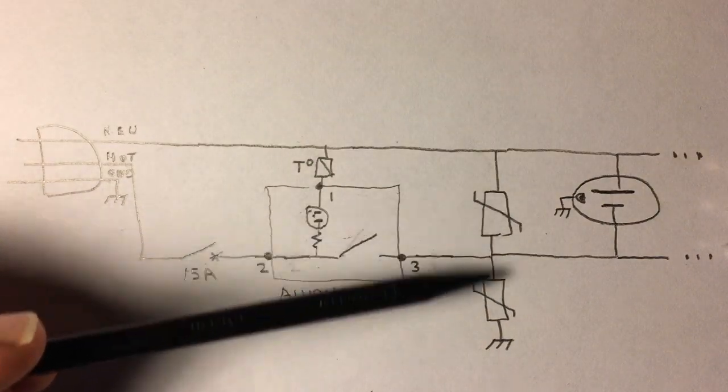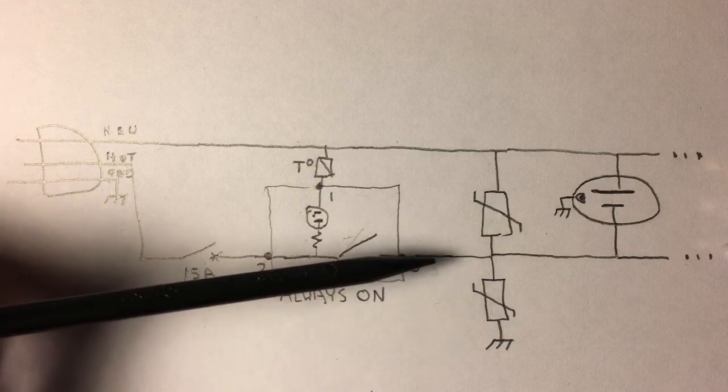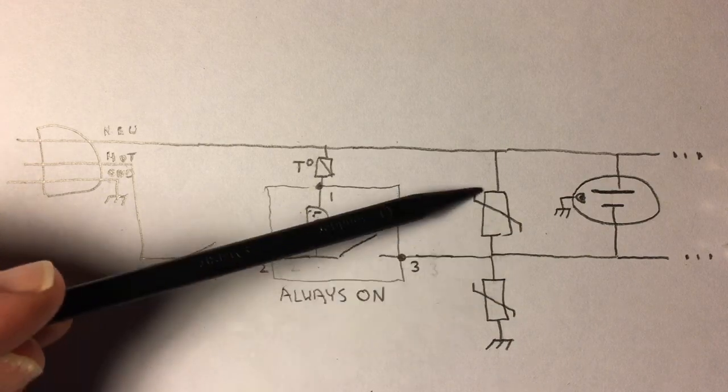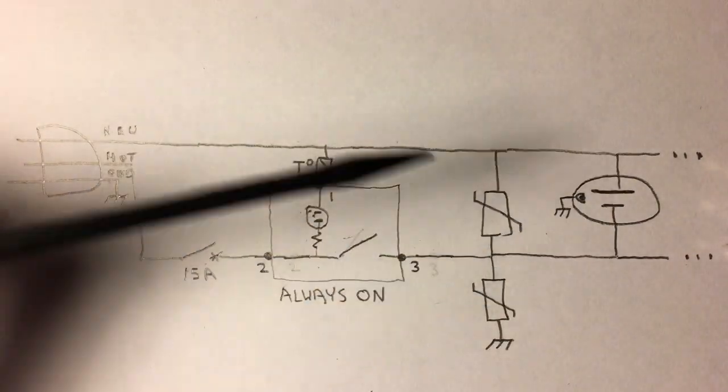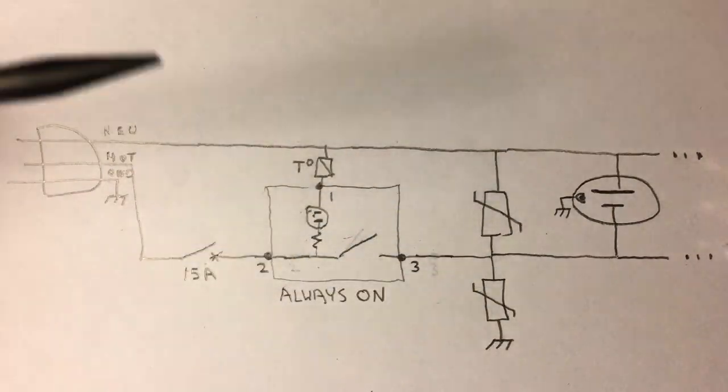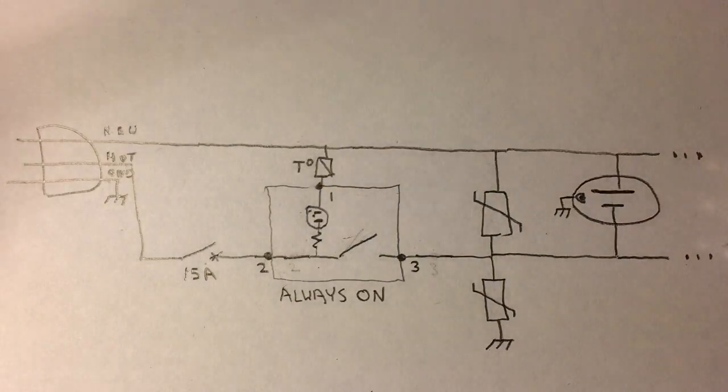Every time one of these MOVs takes a power hit, its breakdown voltage comes down. So these are only at like 200 volts. So they're already pretty low by modern standards and a few hits will get you close to line voltage and you're not getting much protection there.